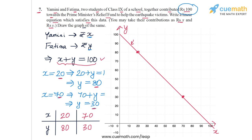Before we end this problem, observe something interesting from this graph: as X increases, Y decreases. This makes sense — if Yamini's contribution is increasing, then Fatima's contribution will decrease because the total is constant at 100. Let me show you a simulation to help you visualize this behavior.